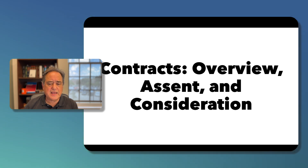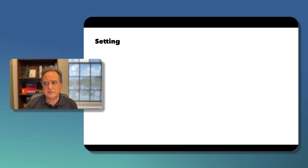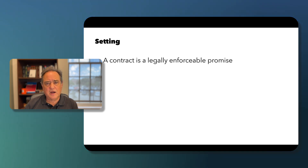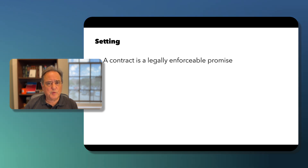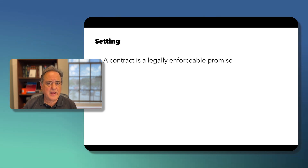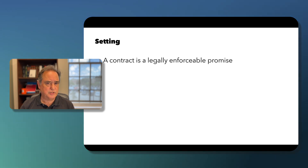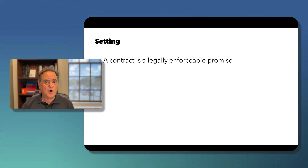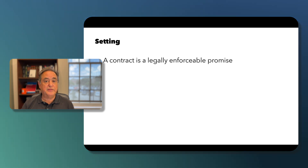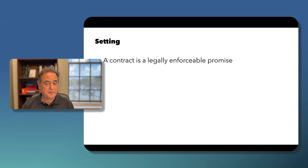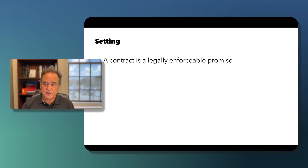We're going to be looking at these aspects of contracts. A contract is a legally enforceable promise. Legally enforceable means that if a person violates the terms of a contract — if they fail to perform as they promised — then the wronged party has a right to bring a claim in court to have the court order compliance or payment of damages.